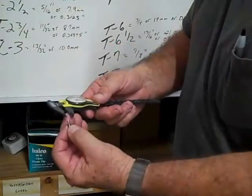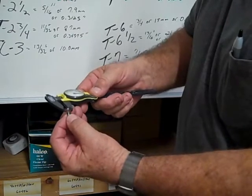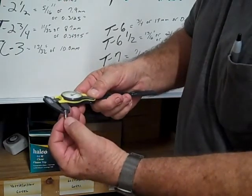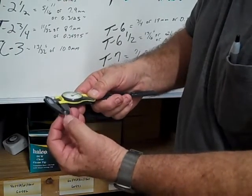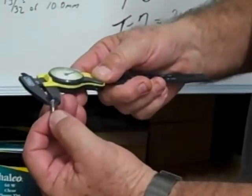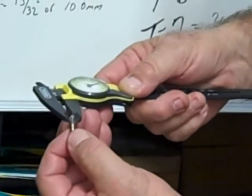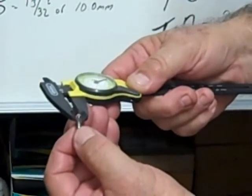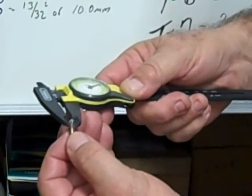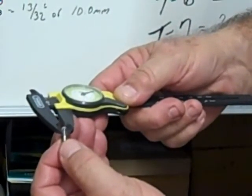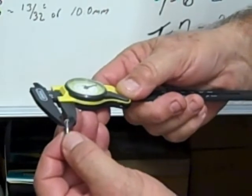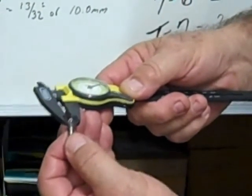This is a T-1¾ bulb with a one and three-quarter eighths inch diameter glass envelope, measuring just the glass, not the base. That's equivalent to 7/32 or 0.21875 inches, which equals 5.5 millimeters.